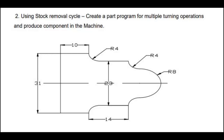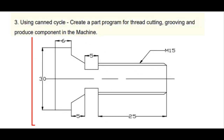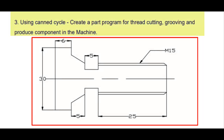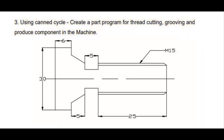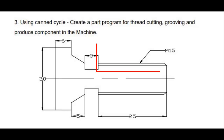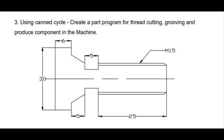Material used for components includes aluminum, fiber, plastic, MS — mostly plastic and fiber, such as nylon rod. The third exercise uses canned cycles for thread cutting and grooving — G71 for turning, G75 for grooving, and G76 for threading. Three tools are used for these combined operations in CNC turning.